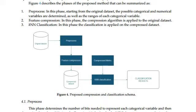Variations of this method have been proposed, such as condensed KNN, which divides the training dataset into clusters to be classified. Other variations reduce the input dataset in order to apply the algorithm.